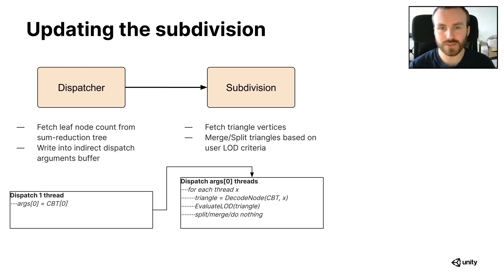Each thread gets assigned to its triangle using the sum reduction tree, and once we've fetched the triangle vertices, we can decide whether or not we want to split it or merge it. This depends entirely on the chosen level of detail criteria, which I'll talk about a bit later. If we want to split or merge a triangle, we use the leb library to do so while preventing cracks in the geometry, and the cbt library to update the binary tree using atomic operations to avoid race conditions.